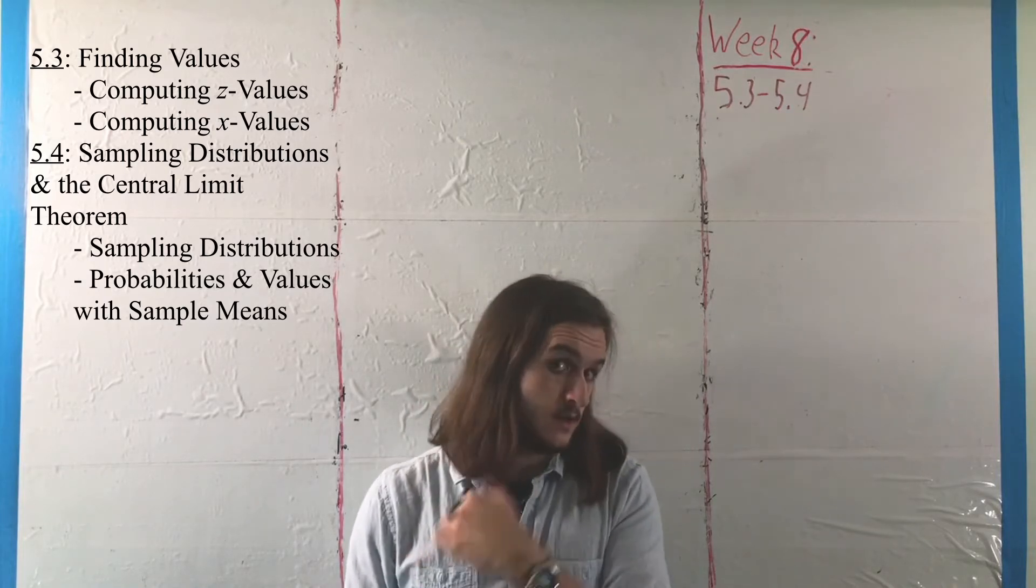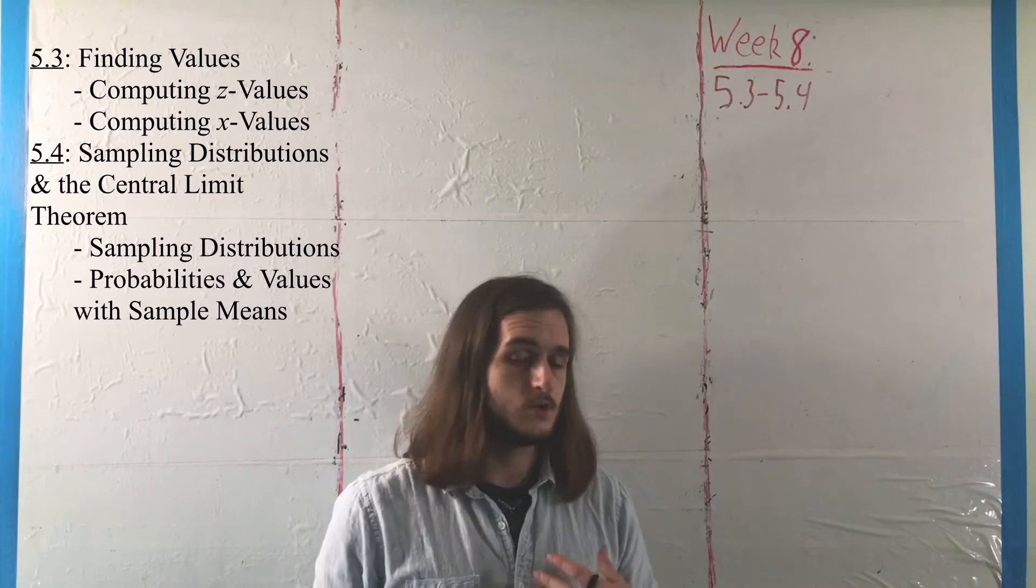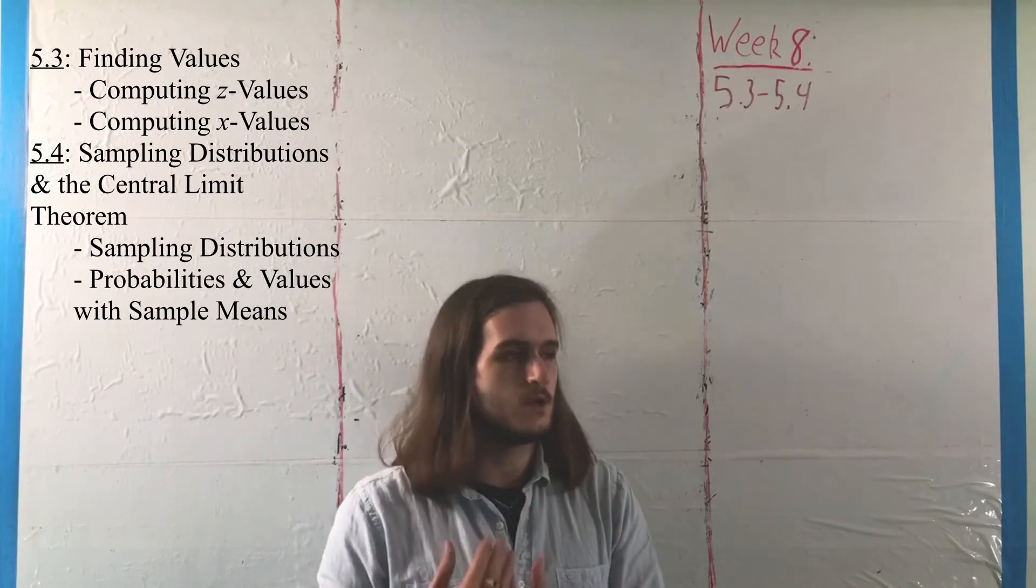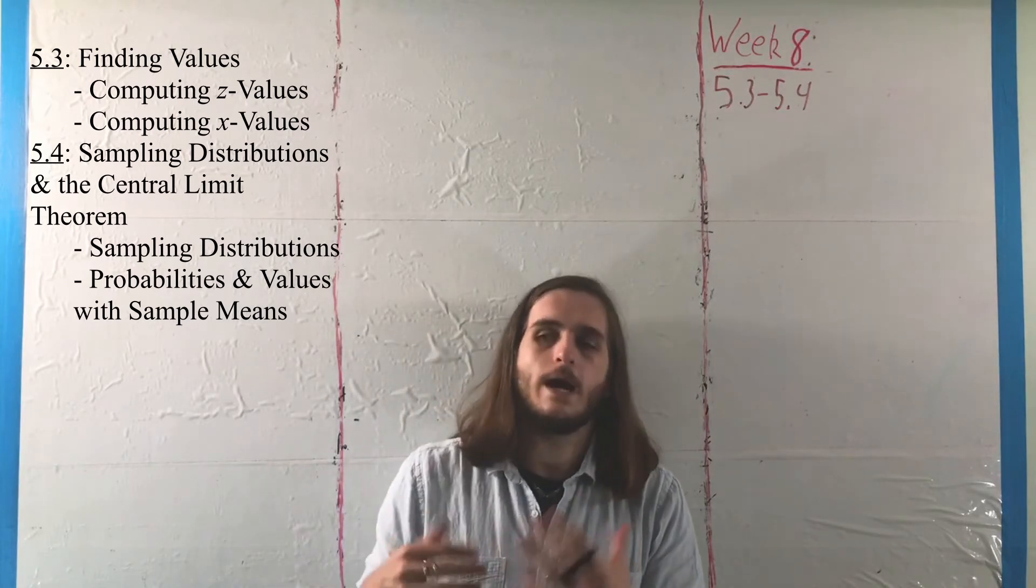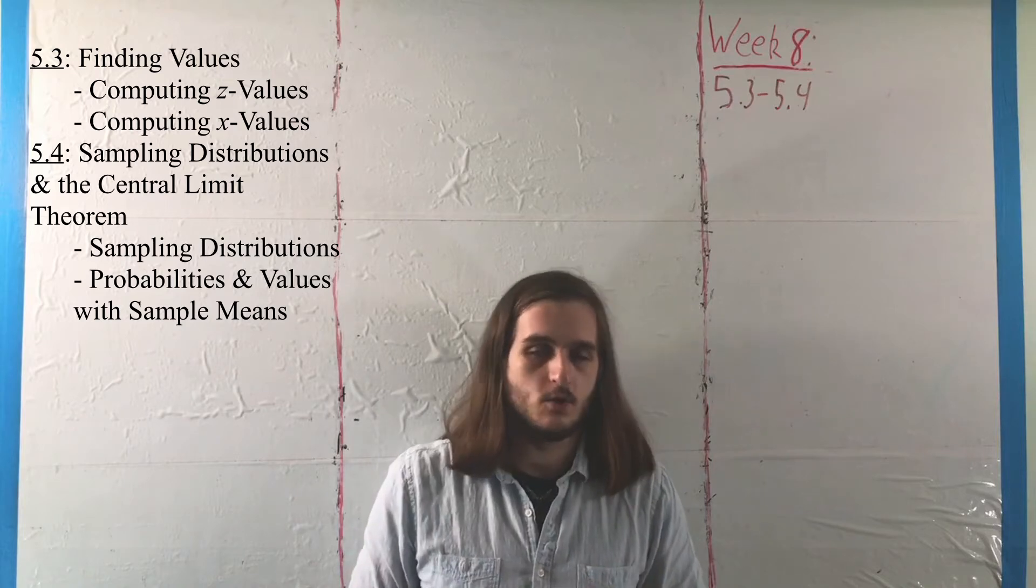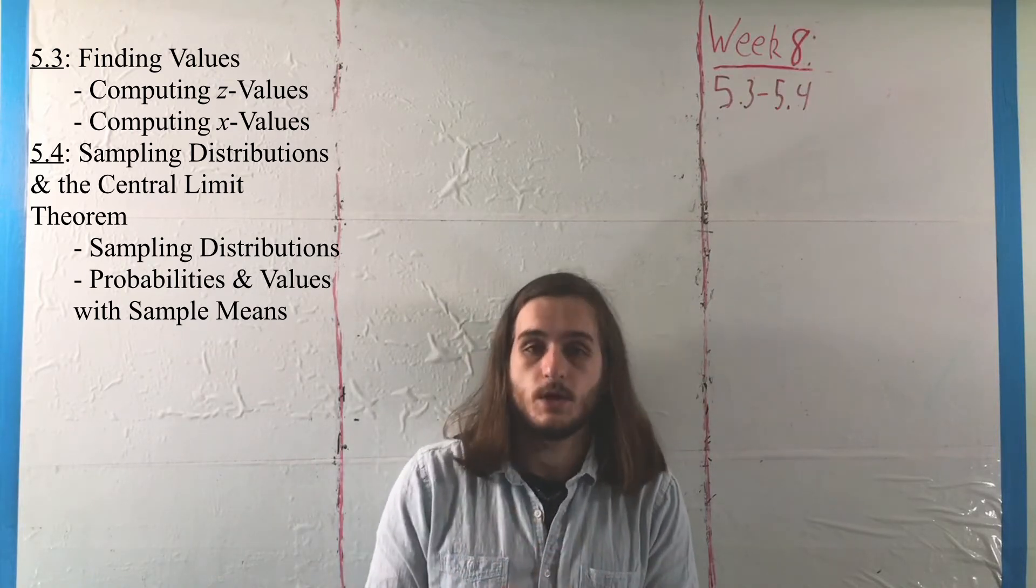implicitly call upon the Central Limit Theorem. The Central Limit Theorem is a vitally important result, and it kind of codifies why we might care about the normal distribution at all, because a lot of things aren't normally distributed.